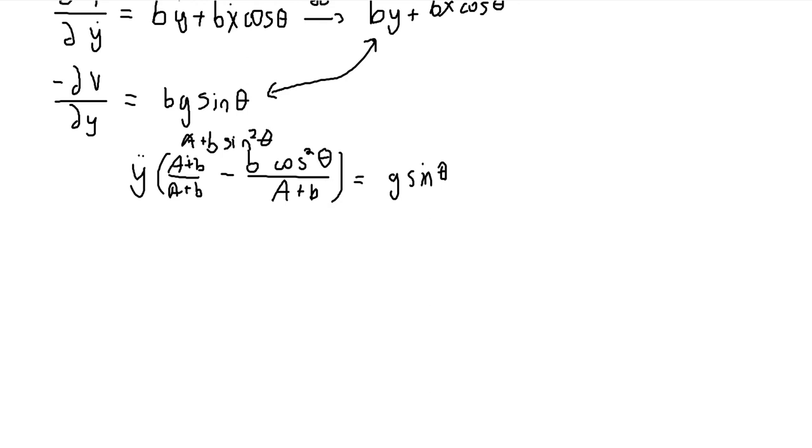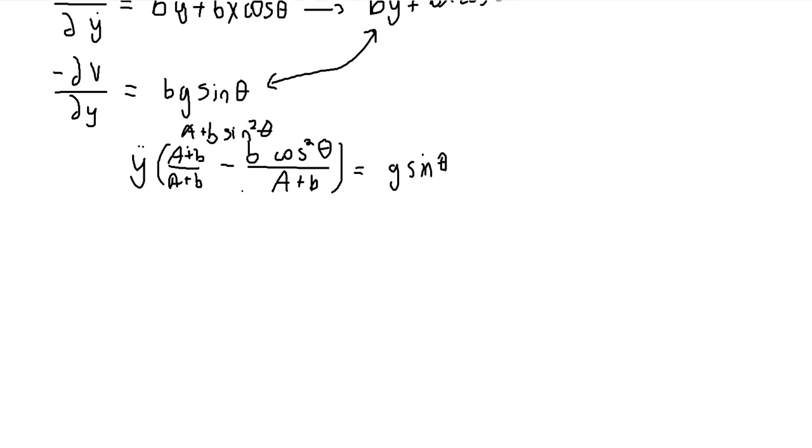And so we have A plus B sine squared theta over A plus B. So we can just multiply the reciprocal on both sides, and we get that the derivative, the acceleration, is A plus B G sine theta, all over A plus B sine squared theta.